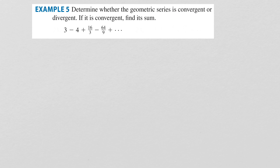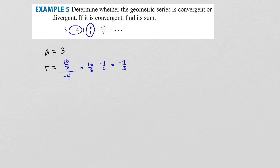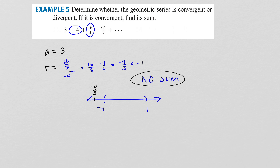In our next example, we again ask if the geometric series is convergent or divergent. The first term is 3. Taking two successive terms: 16/3 divided by −4 equals 16/3 times −1/4, which is −4/3. Since −4/3 is less than −1, the absolute value of r is greater than 1, so there is no sum. To have a sum, the value of r must be between 1 and −1.